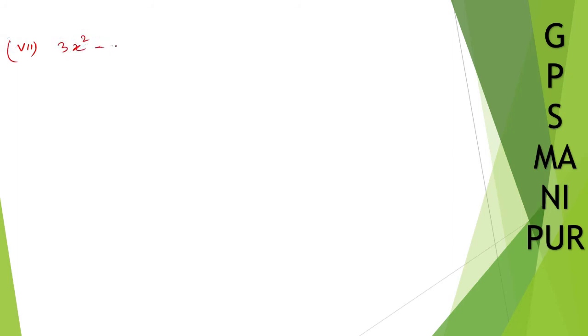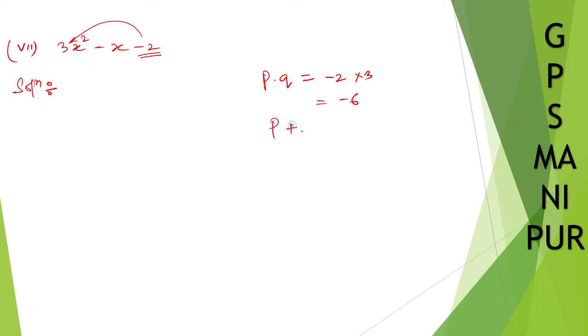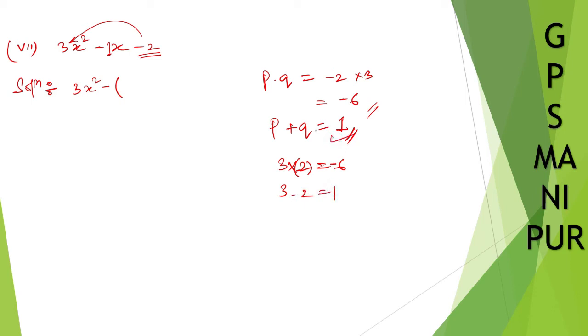Now let us do roman number 7. The question is 3x squared minus x minus 2. Solution. We need to find two numbers such that p into q is equal to minus 2 into 3, so minus 2 into 3 is minus 6. And p plus q must equal the coefficient of x, which is 1. Now find the number: 3 into minus 2 is minus 6, and 3 minus 2 is 1. So we split the middle term as 3x minus 2x.